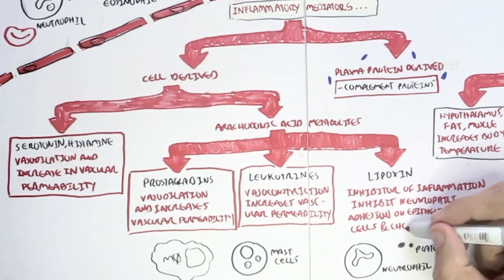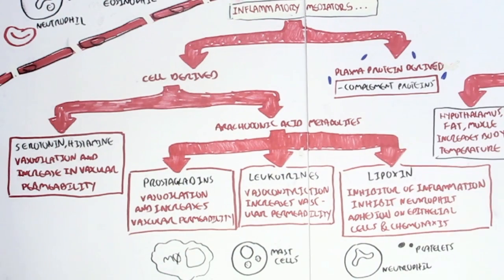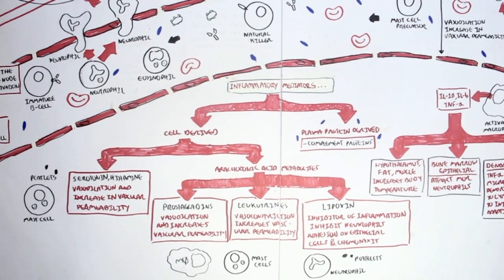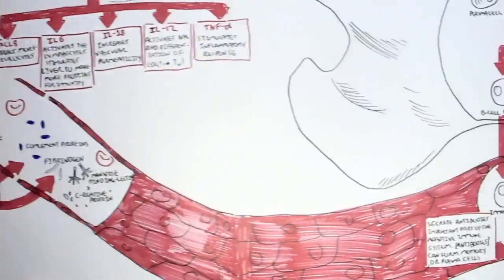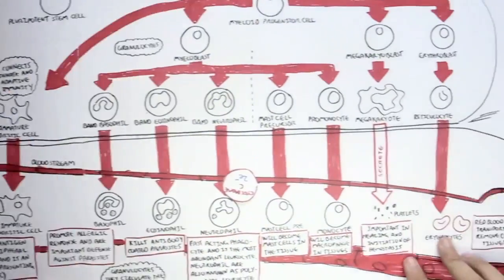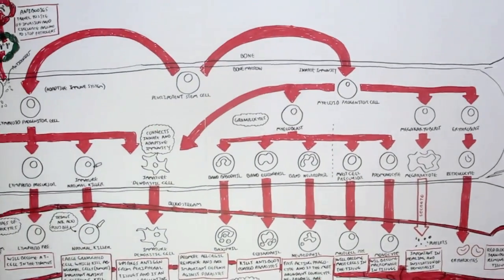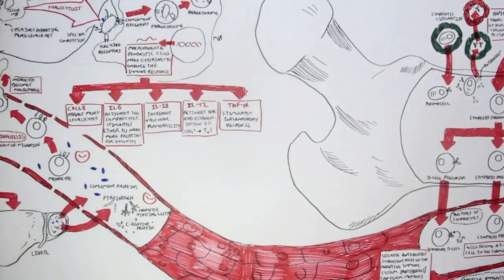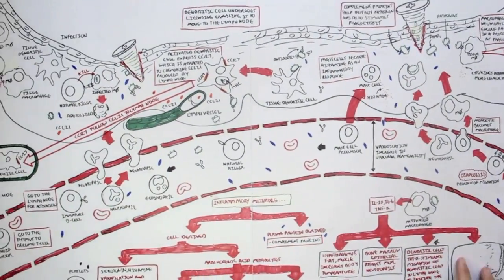So that was it for the inflammatory mediators. That's just important to know because these inflammatory mediators are important in hypersensitivity response, which we'll learn about later on in this immunology map. So this concludes the overall picture of the innate immune system and the adaptive immune system. So that was just like an overall image of how the immune system works.